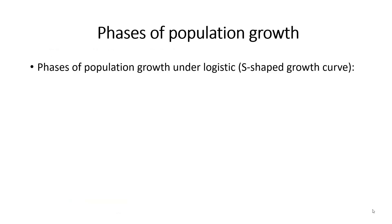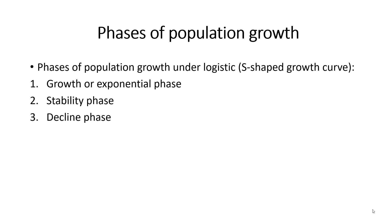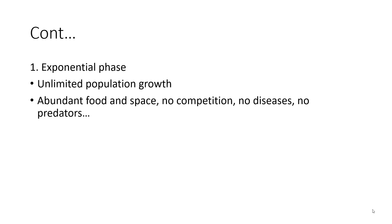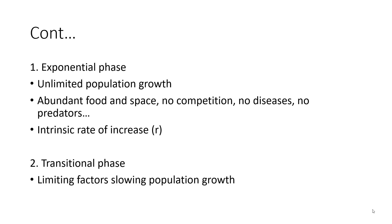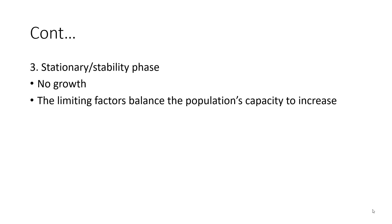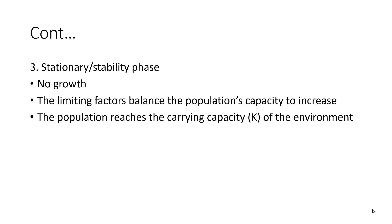The phases of population growth under the logistic curve are: the exponential or growth phase, stability phase, and decline phase. In the exponential phase, there is unlimited population growth — a huge abundance of food and space, no competition, no diseases or predators, and the intrinsic rate of the population increases. In the transitional phase, limiting factors slow the population growth. In the stationary or stability phase, no growth occurs — the limiting factors balance the population's capacity to increase and the population reaches the carrying capacity. This is followed by the decline phase, where the population ultimately decreases.